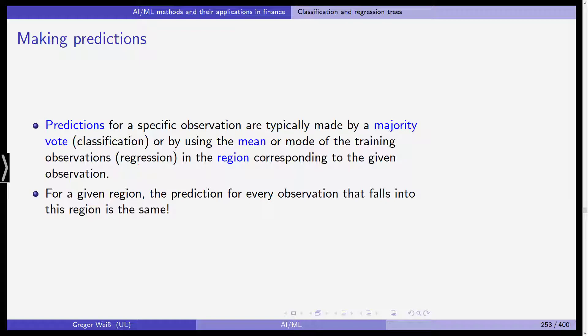How do we do predictions? For a specific observation, predictions are typically made by a majority vote in classification — meaning if it's more than 50% it's classified one way, if less than 50% the other way. Or by using the mean or mode of the training observations in regression analysis in the region that corresponds to the given observation. For a given region, the prediction for every observation that falls into this region is the same.